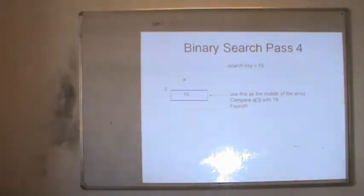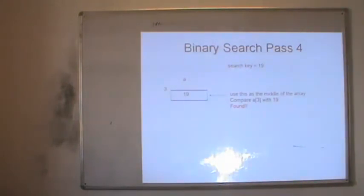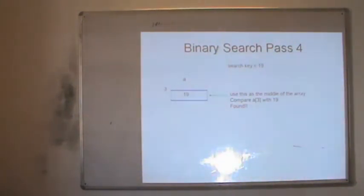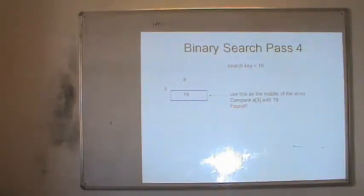At each try, we divide the whole array into two parts by first finding the middle position and then comparing the value at the middle position with the target. If the target equals the middle value, we have found it. If the target is less than the middle value, we search in the first part; otherwise in the second part.